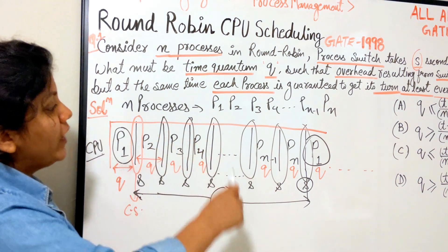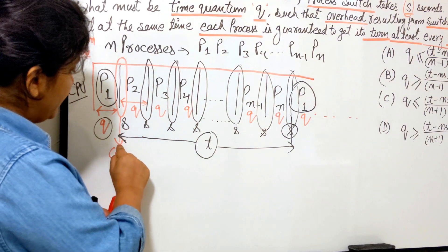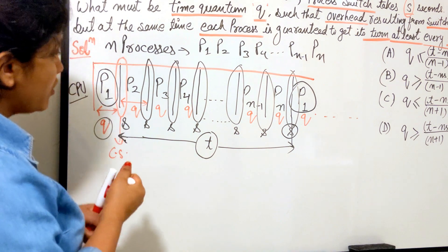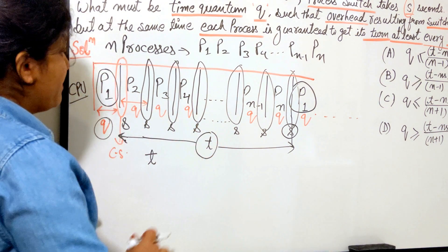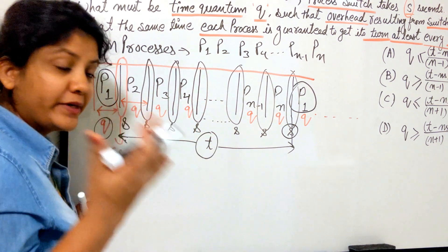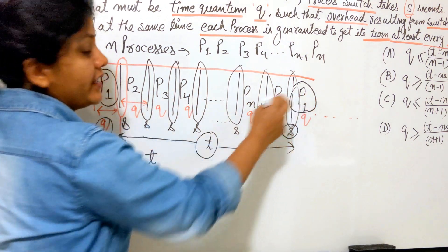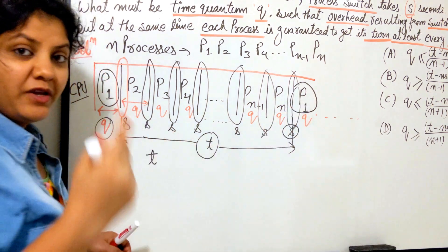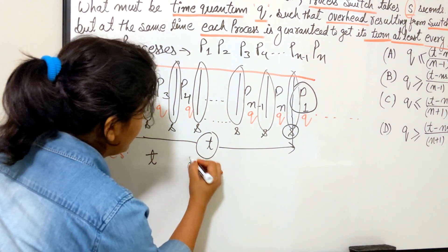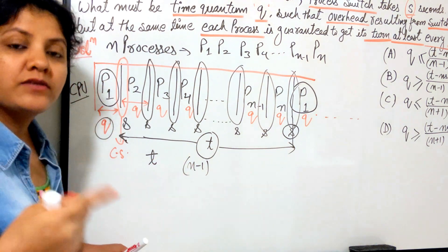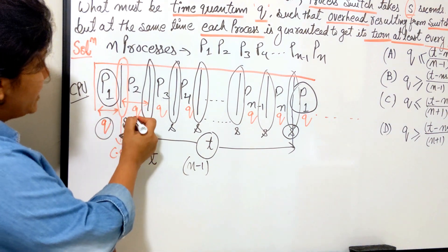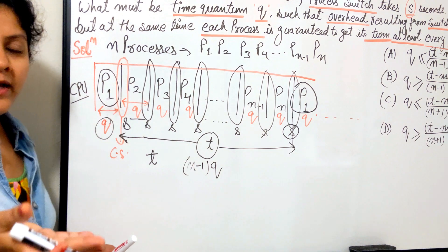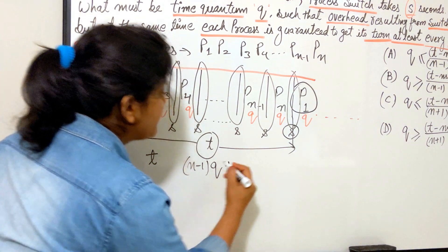Between the first and second execution of p1, how many processes are running? We have n processes total, so n-1 other processes run between the two executions of p1. Each process runs for one time quantum q, so the total execution time for those n-1 processes is (n-1) × q. This accounts for the pure running time between p1's two turns.